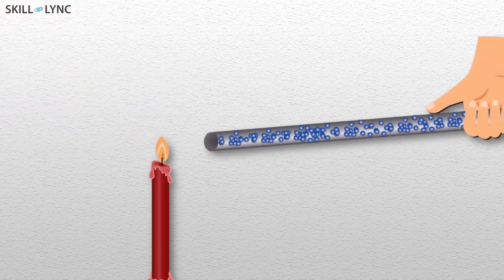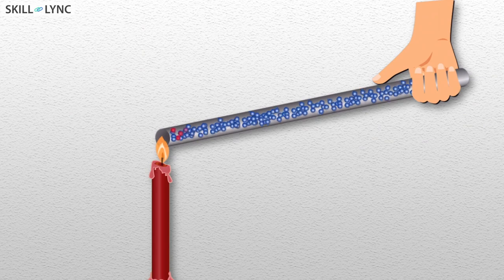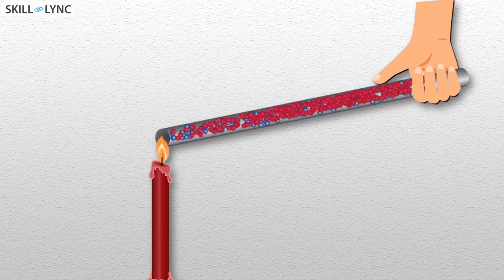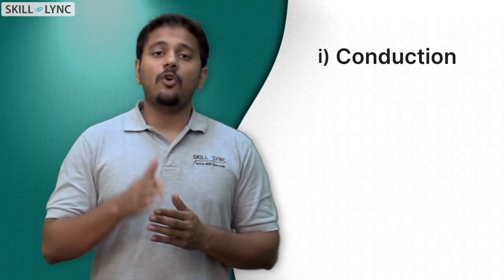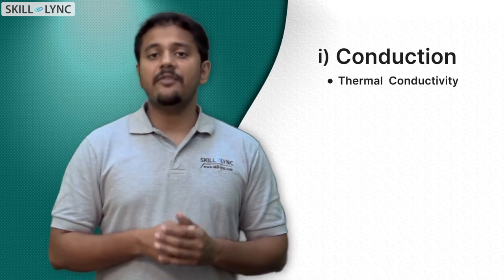In a solid metal rod, if we heat one end, the electrons start to vibrate there and the vibrations transfer to the other end of the rod, thereby increasing the temperature. The speed at which the vibration travels depends on critical material properties such as thermal conductivity, specific heat, and density.